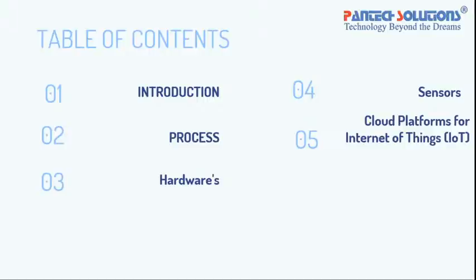Sensors are important. When you want to do IoT, you need sensors — not only for IoT, but also for Artificial Intelligence, robots, or driverless cars. Cloud platform for Internet of Things is also important. To achieve 100% IoT, we need to use cloud storage. Without cloud storage, an IoT project is not fully fulfilled. I will tell you how to use clouds and retrieve data from them.